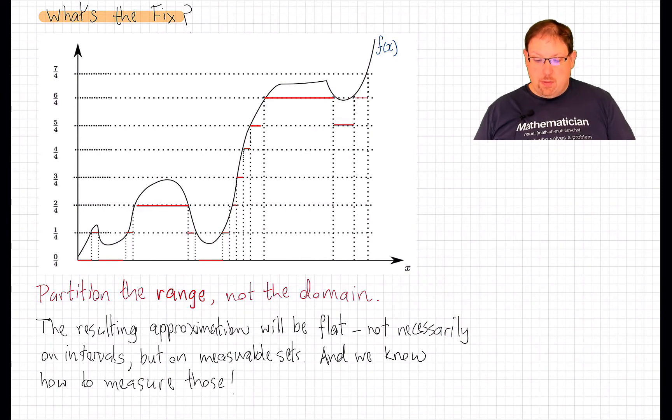We start with a measurable function on the real line, f, and instead of partitioning its domain, we partition the range of the function.